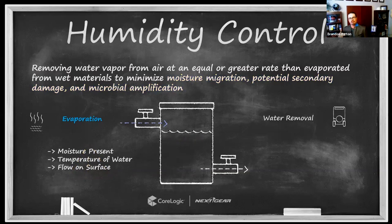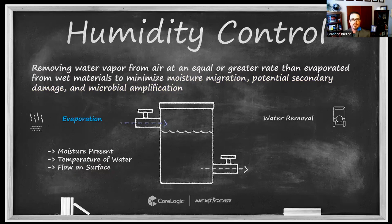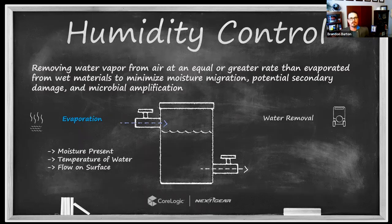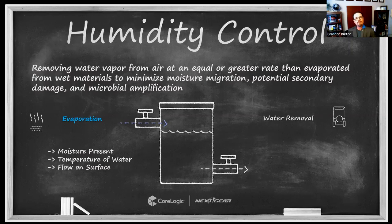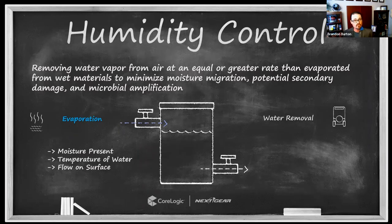How do we come about humidity control? Understanding that's the challenge, the first place I want to start is the place most of us overlook. Humidity control is about removing water vapor at an equal or greater rate than it's evaporating — there are two sides to that equation. We always focus on the water removal end and overlook the evaporation end.